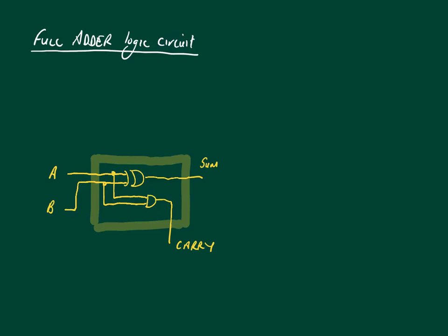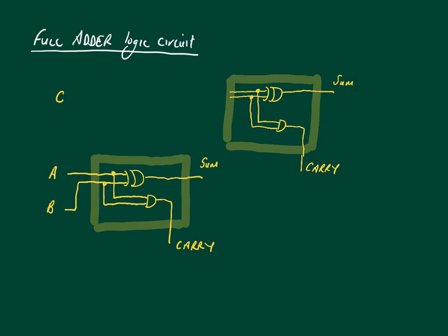But for the full adder you need to have C, which is the carry from the previous half adder. And we just have a second half adder at the top right, but this time instead of A and B feeding in, we have C as the first input and we have the sum coming out from the first half adder as a second input.